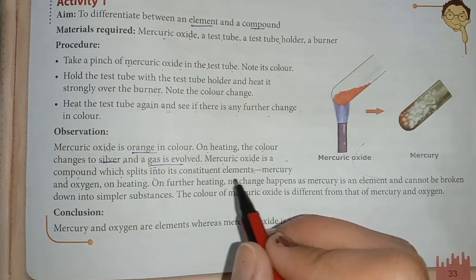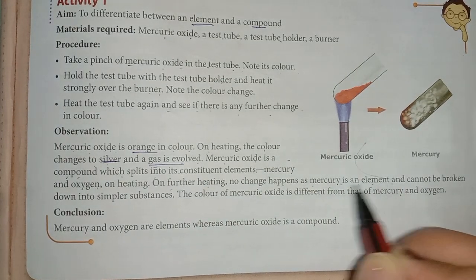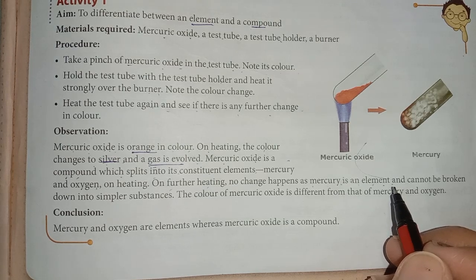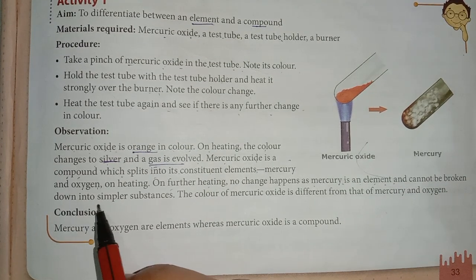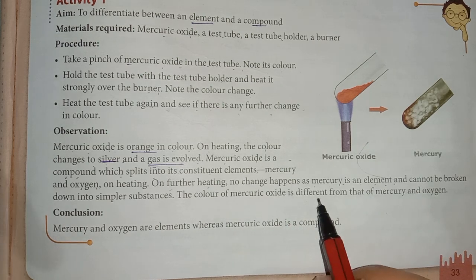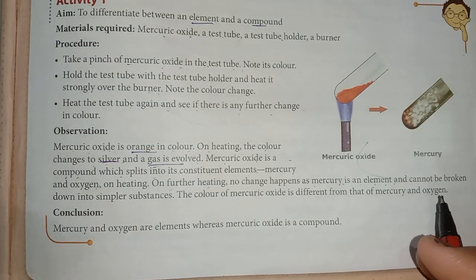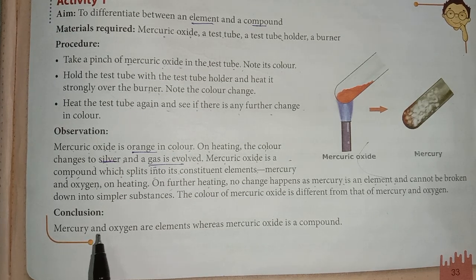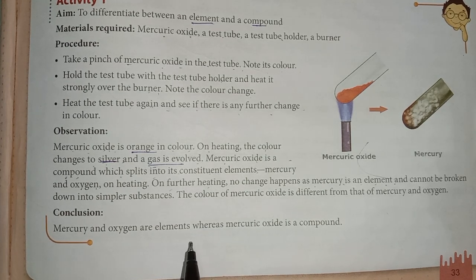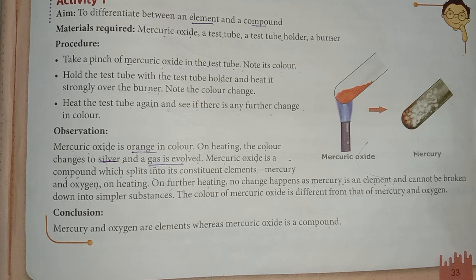Mercury oxide is a compound made of mercury and oxygen. When heated, it splits into its constituent elements — mercury and oxygen. On further heating, no change happens because mercury is an element and cannot be broken down into simpler substances. The color of mercury oxide is different from that of mercury and oxygen. The result is that mercury and oxygen are elements, while mercury oxide is a compound.